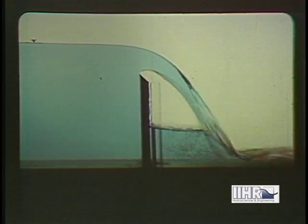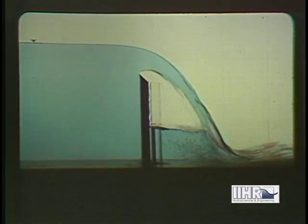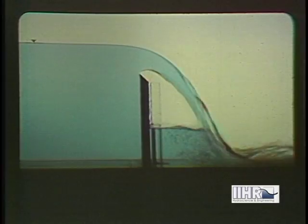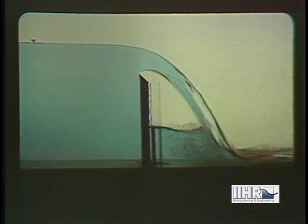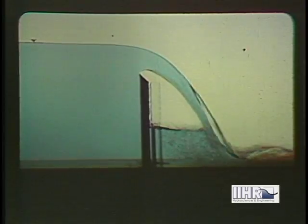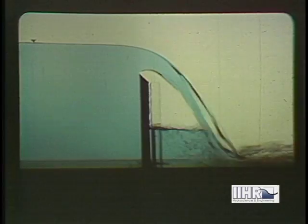If a weir is used for flow measurement, the lower, as well as the upper surface of the nap, must be kept at atmospheric pressure by ventilation. The rise in water level under the nap is now purely a dynamic effect involved in the deflection of the stream by the floor.